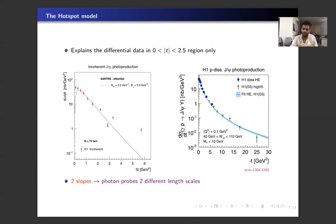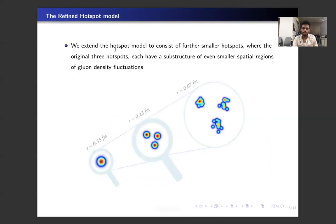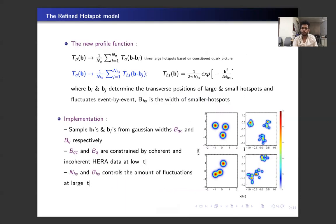This is the prime motivation of refining the hotspot model, and we extend the hotspot model to consist of further smaller hotspots where we have gluon density fluctuation at these smaller length scales. So these are the associated length scales, and here are the two snapshots of the proton profile in the hotspot model and in the refined hotspot model on the right-hand side.